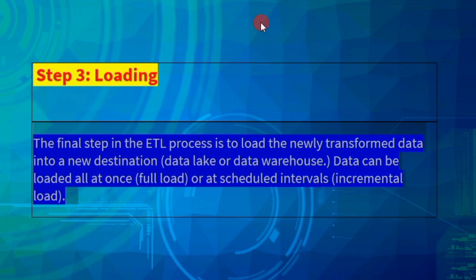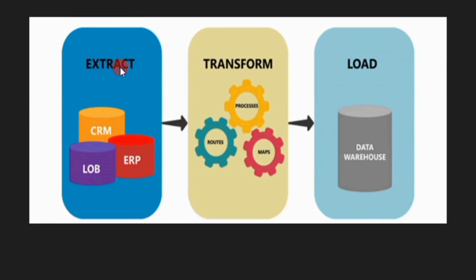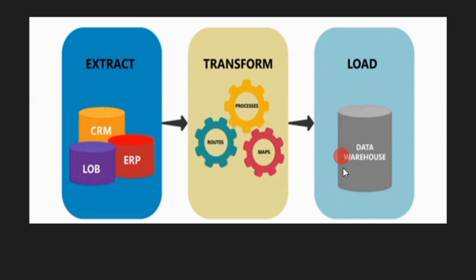Let's look at the three steps. First, we extract data from different sources — various databases and files. We create one consolidated dataset. Then during transformation, we load the rules and logic. Finally, we load the data into a single database in the final step.